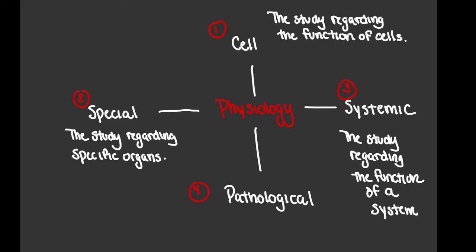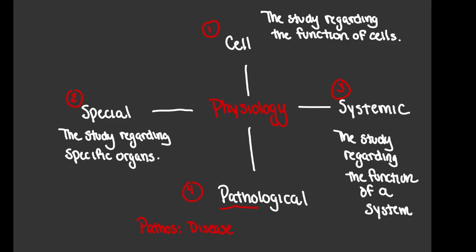Last but not least, we have pathological physiology. The prefix patho or pathos essentially means disease. So pathological physiology means we're studying how a disease functions in the body. But it goes a little further than that — we also give attention to how we can correct that disease as well. That's it for this learning support video; I hope it was helpful. I'll see you in the next video.